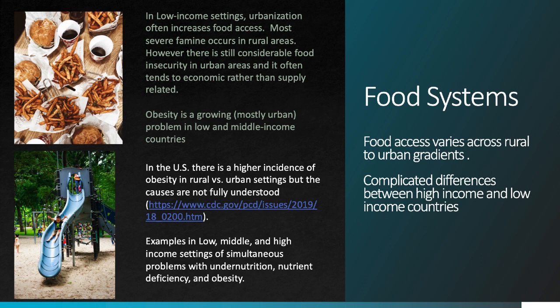The other interesting issue with urban settings is that of obesity. Obesity is increasing even in low- and middle-income countries, and is increasing most quickly in urban settings. In high-income countries, it's a huge issue everywhere. Interestingly, in the United States, obesity tends to be higher in rural settings than in urban settings for reasons that are not fully understood — there's a link to a CDC research study on the page if you want to look into this. And if you find yourself someday in one of the world's megacities, you can be pretty confident that you're going to find a combination of food-related problems ranging from undernutrition — not enough calories or nutrient deficiency — to obesity, all within a few tens of kilometers.